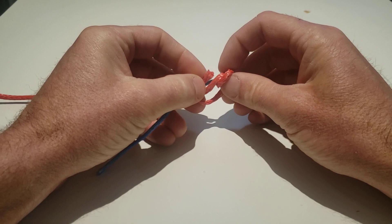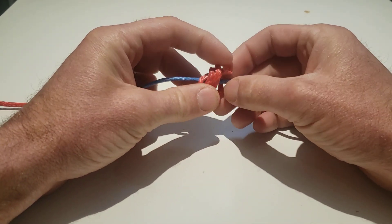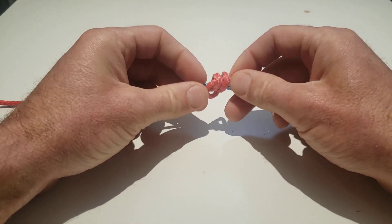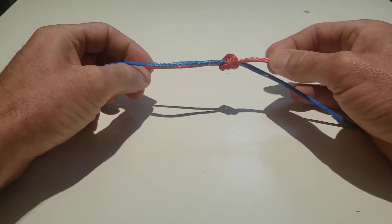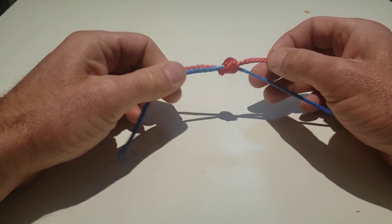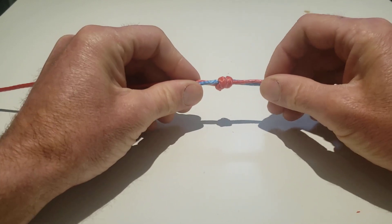And then run that red line, like I said it's going to be pointing to the right. I'm going to run it under those two loops and then pull the two ends of the red line so it's tight. You can see there's those two loops.